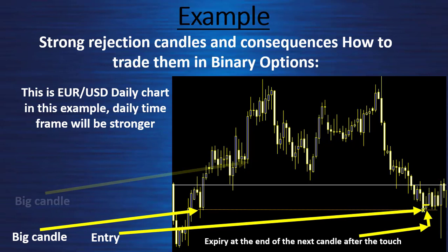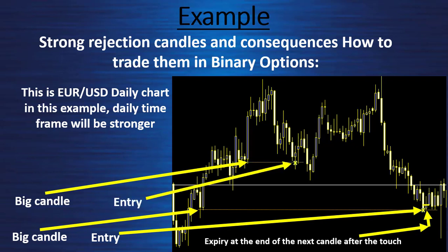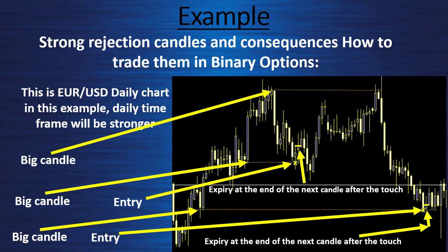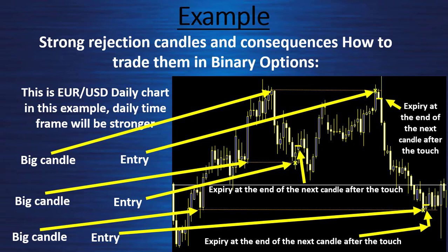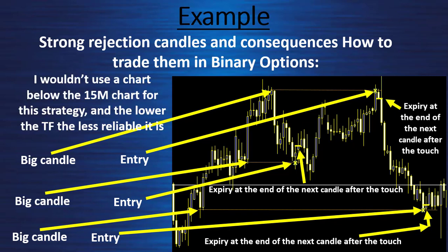My entry is the first touch. Another one: big candle starting from a newly created turning point. I draw my line at the average of the week, and the same happens — it's a winning trade; end of the next candle after the first touch is the expiration. Same: big candle, entry at the average of the week, expiration end of the next — it's a winning trade also. I wouldn't use a chart below the 15-minute chart for this strategy, and the lower the time frame the less reliable it is.